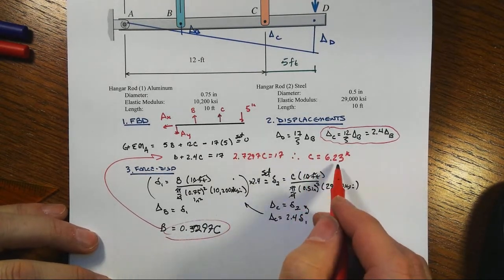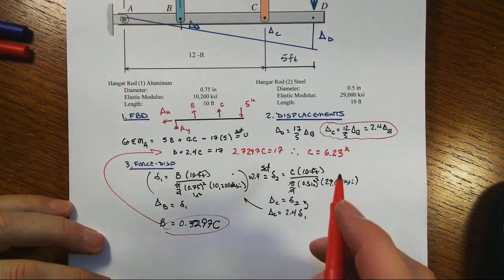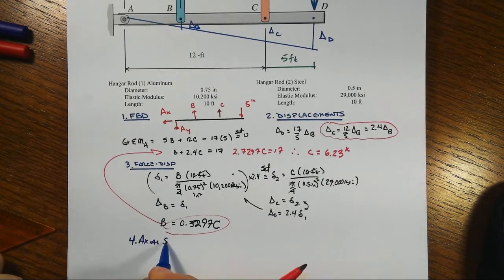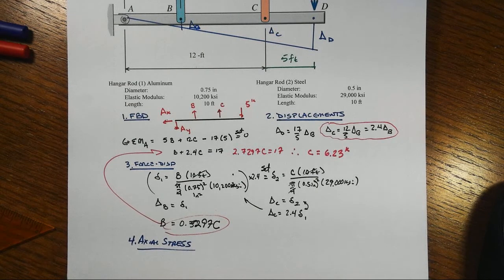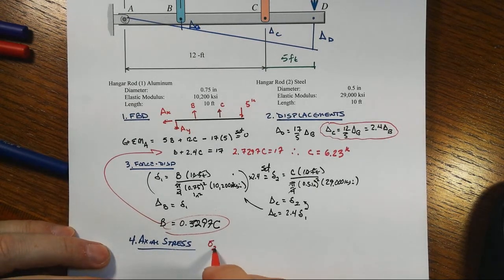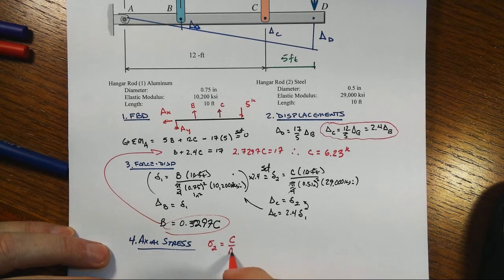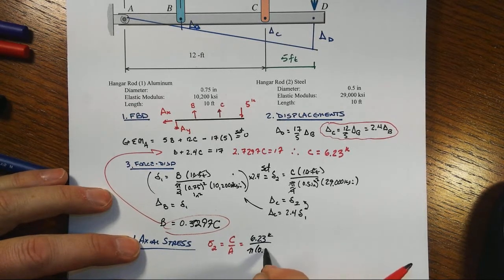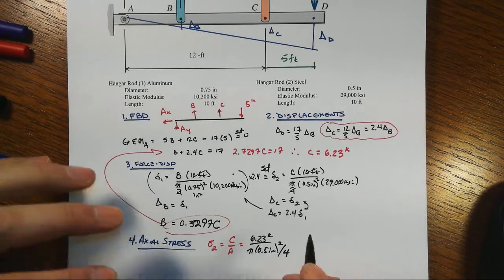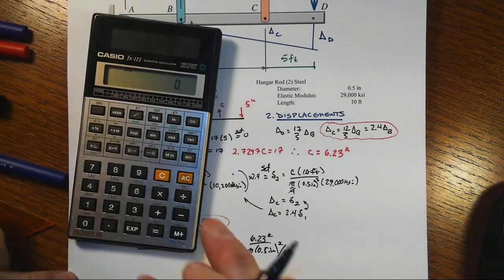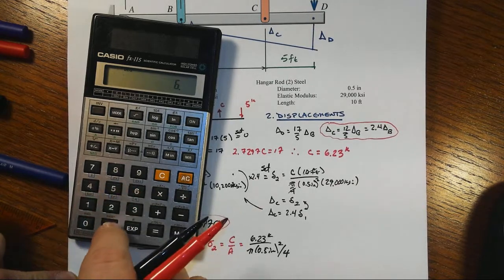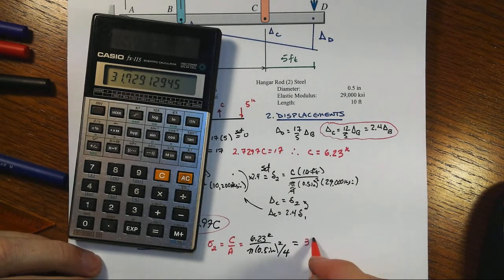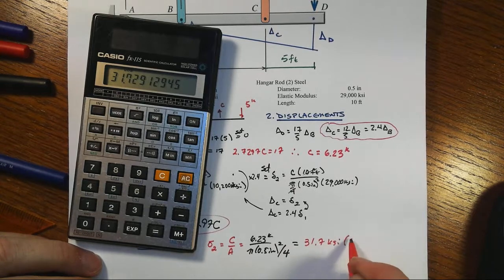That just gives us the C value and the C value only, which is all we need because to get the axial stress, then sigma in number 2 equals the force C over the area or our 6.23 kips over our pi times 0.5 inches quantity squared over 4. So that's the same thing as a 16. So 16 times 6.23 divided by pi, and you get a stress in tension of 31.7 ksi tension.